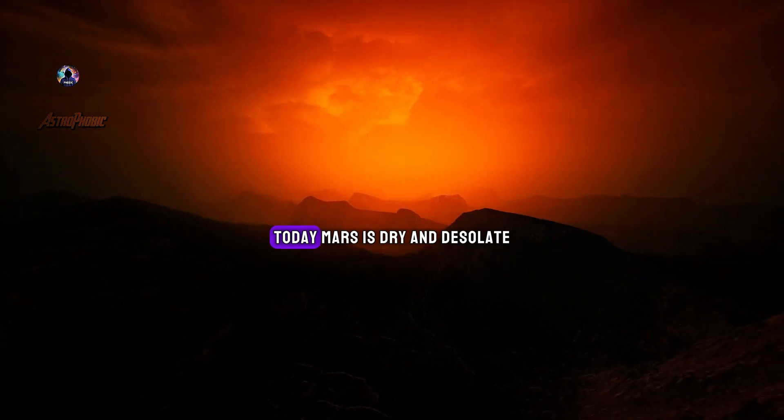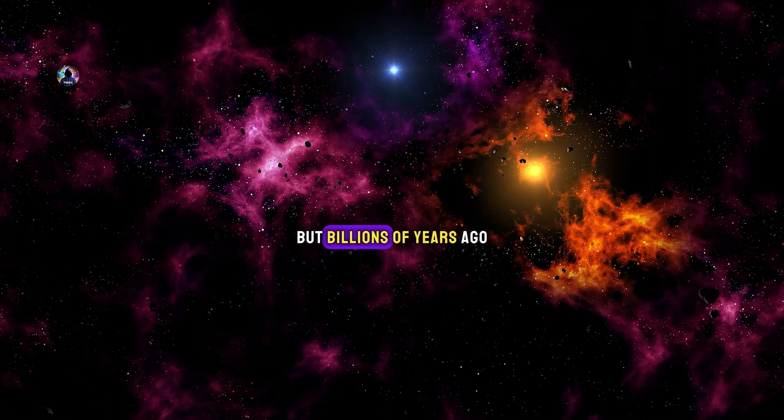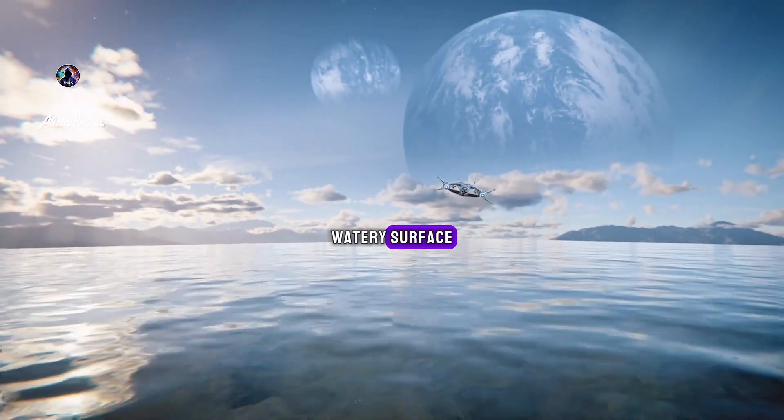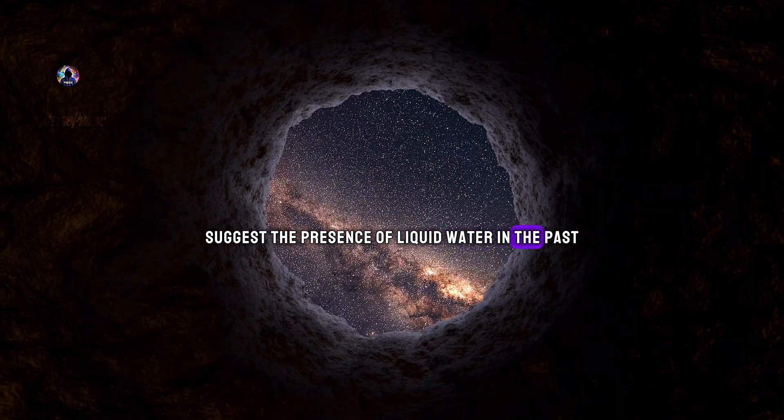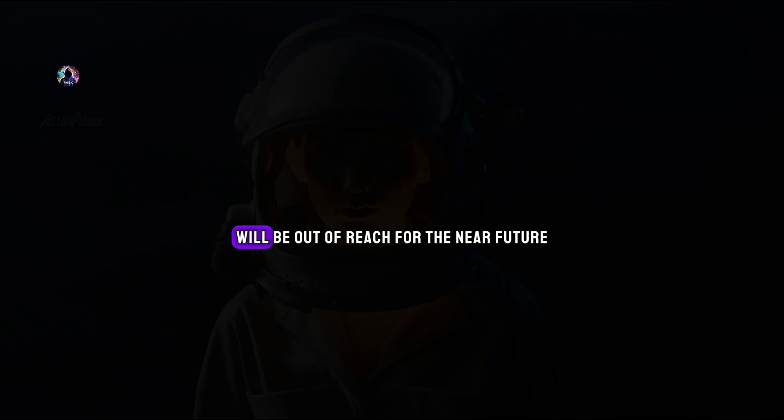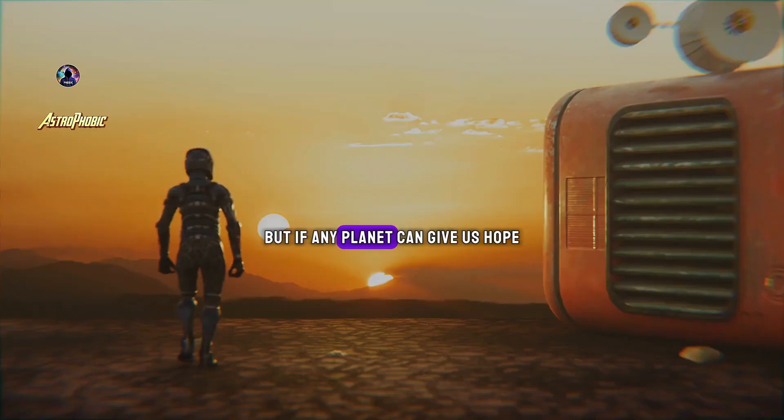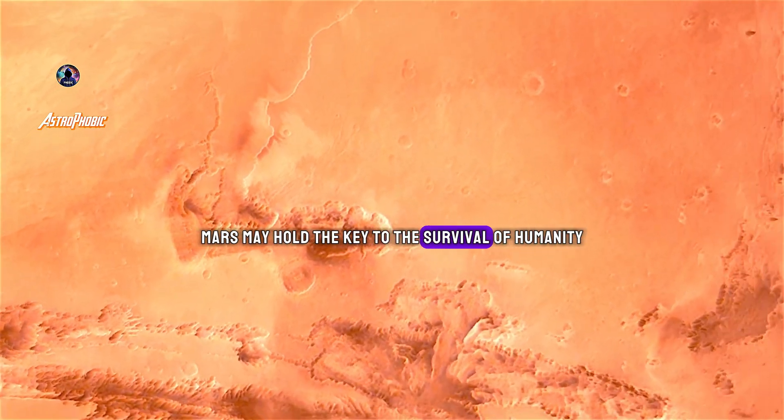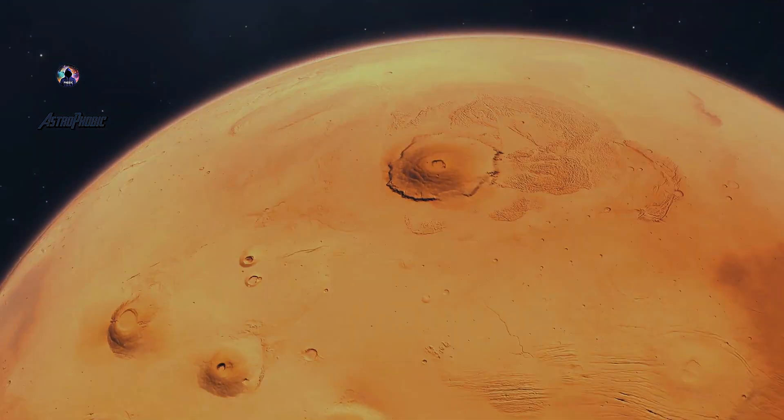Today, Mars is dry and desolate. But billions of years ago, it had a warmer, watery surface. Lake beds and river valleys suggest the presence of liquid water in the past. Life on another planet may well be out of reach for the near future. But if any planet can give us hope, Mars may hold the key to the survival of humanity.